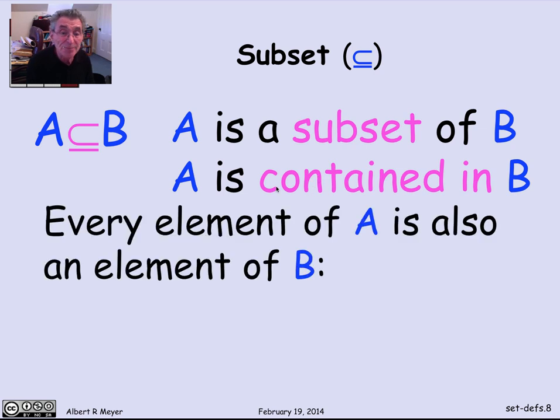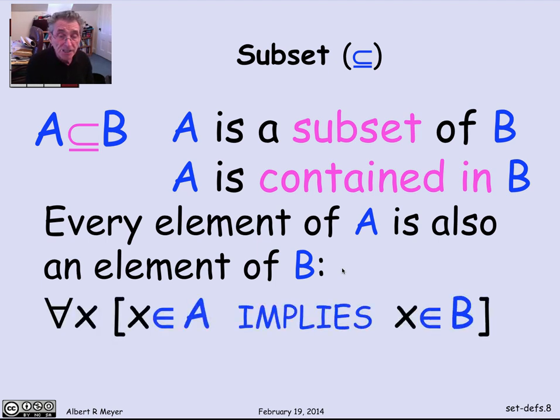So A is a subset of B. A synonym is that A is contained in B. It simply means that every element of A is also an element of B. And if I wrote that out in predicate logic notation, as a predicate formula, I'd say for every x, x is in A implies x is in B. If it's in A, then it's in B. Everything in A is in B.